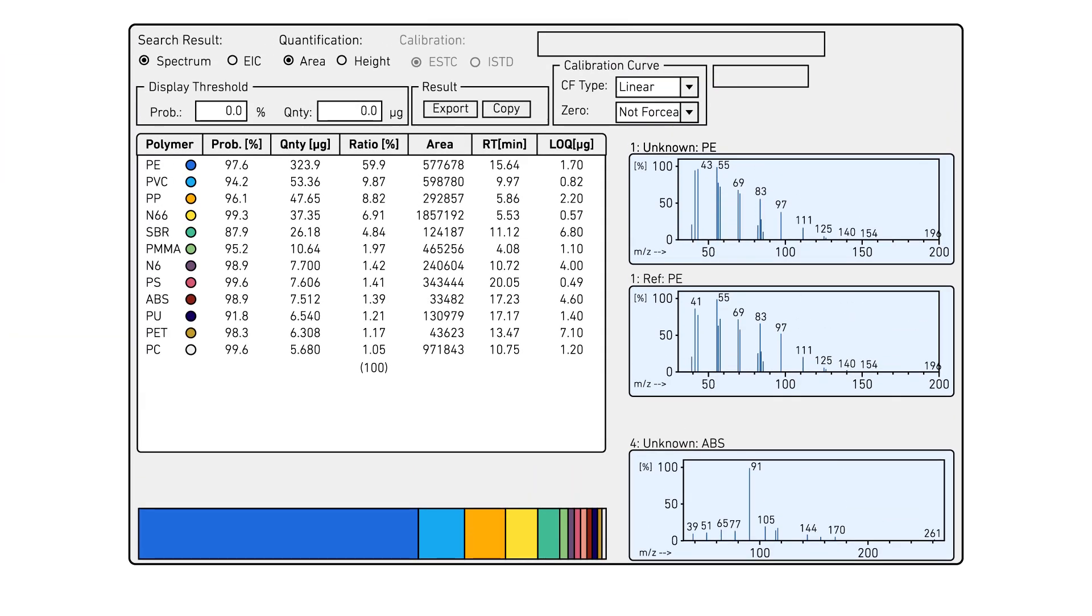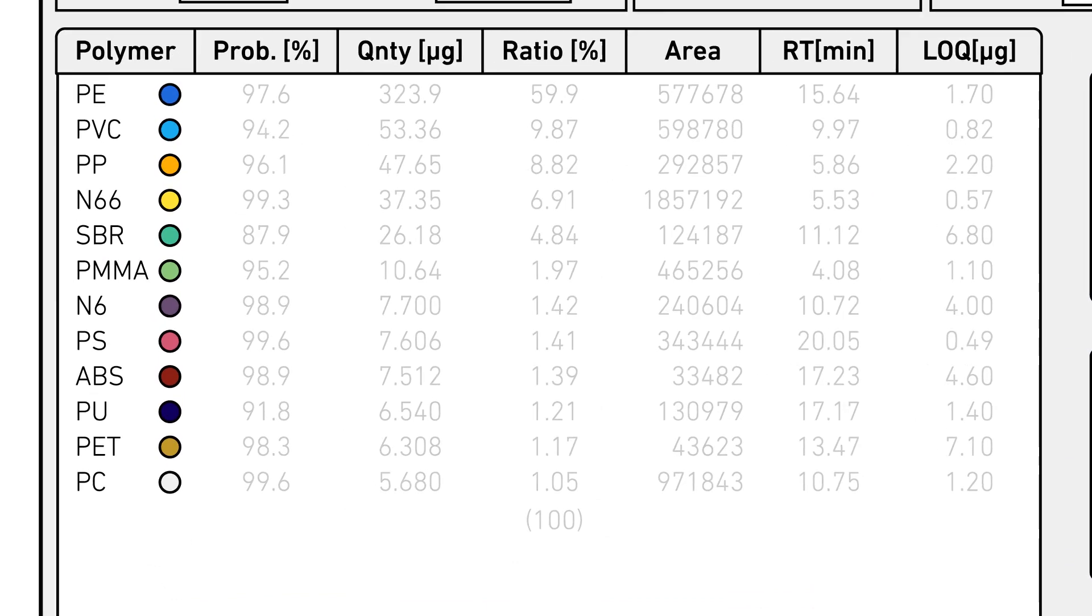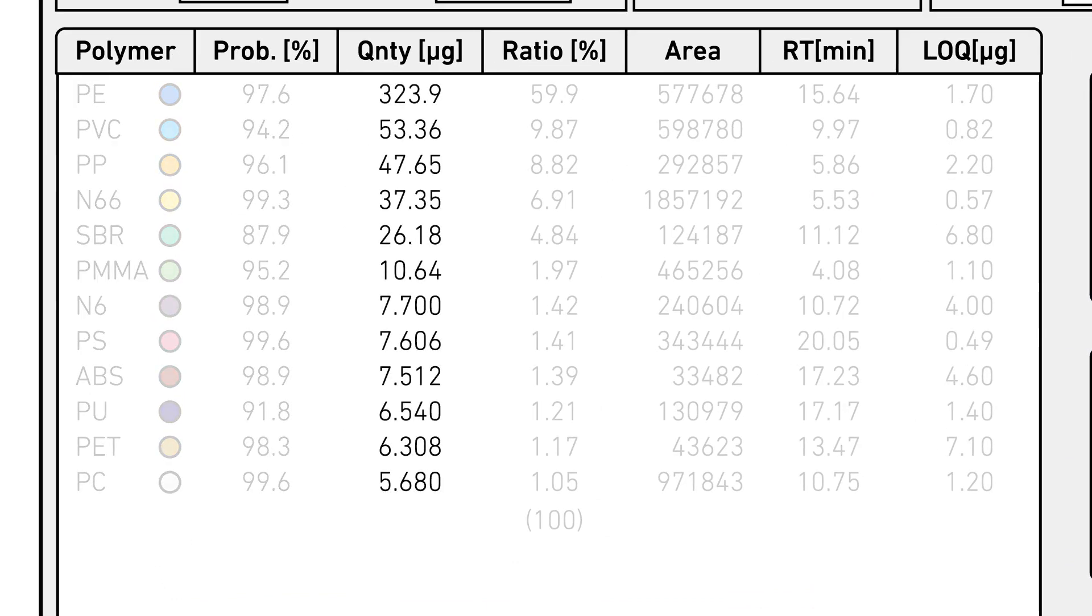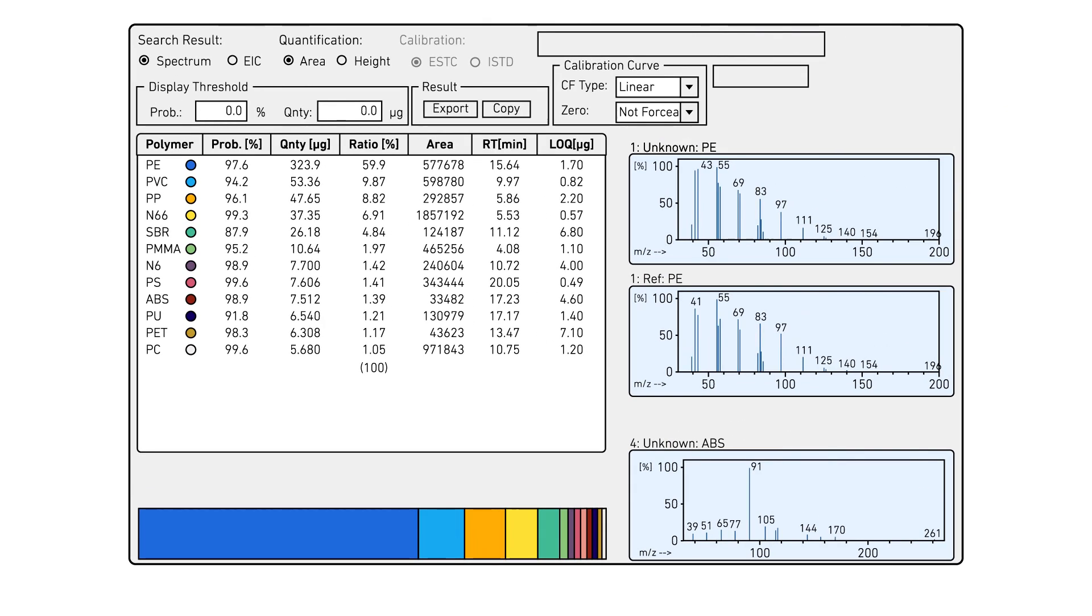Within a few seconds, F-Search MP displays the polymer name, probability match percentage, quantitation result, relative amount percentage, peak area, and LOQ. F-Search MP also provides a bar graph of the relative percentage amount of the quantitated polymers in your sample.